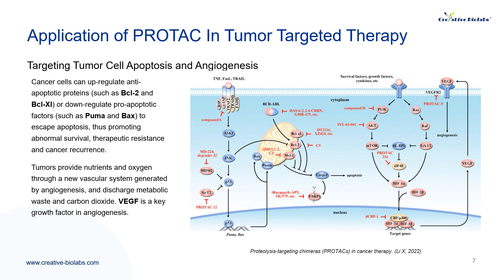Apoptosis is an evolutionarily conserved process that maintains tissue homeostasis under cellular stress, DNA damage, and immune surveillance. However, cancer cells can upregulate anti-apoptotic proteins such as BCL2 and BCLXL, or downregulate pro-apoptotic factors such as PUMA and BAX, to avoid apoptosis, thus promoting abnormal survival, therapeutic resistance, and cancer recurrence. Therefore, targeting apoptosis can initiate programmed cell death of cancer cells and improve their response to anti-cancer drugs.